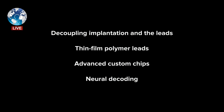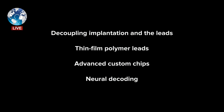Decoupling implantation from the electrodes is incredibly important. The reason things like tungsten microwires get rejected is they're stiff and sharp and tear the brain — they have to be because they have to get into the brain. If you can decouple the process of getting it into the brain from what is left there — which can be much softer with material properties like the brain — that's really important. The thin film polymer leads, the threads themselves, are really cool material science. I'd like to welcome Dr. Matthew McDougall.